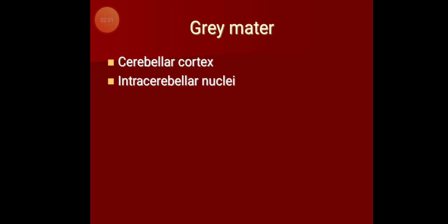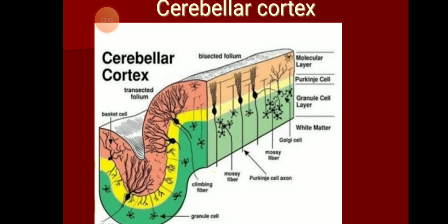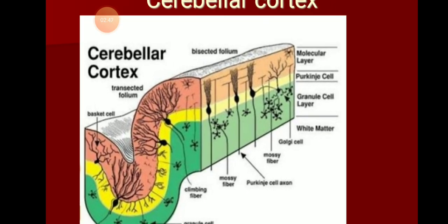Gray matter in the cerebellum is found in two parts: one is the cerebellar cortex, and the other is the intracerebellar nuclei. Looking at the histology of the cerebellar cortex, it is subdivided into three layers: the outer molecular layer, a middle Purkinje cell layer, and an inner granule cell layer. The molecular layer contains two types of neurons — basket cells and stellate cells — plus a large dendritic network of Purkinje cells.